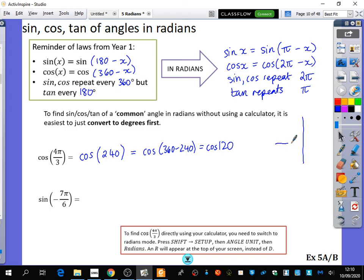And then you might draw your cast diagrams. 120 is going to be over here. So what can you say that it's going to be? Is it going to be positive or is it going to be negative?